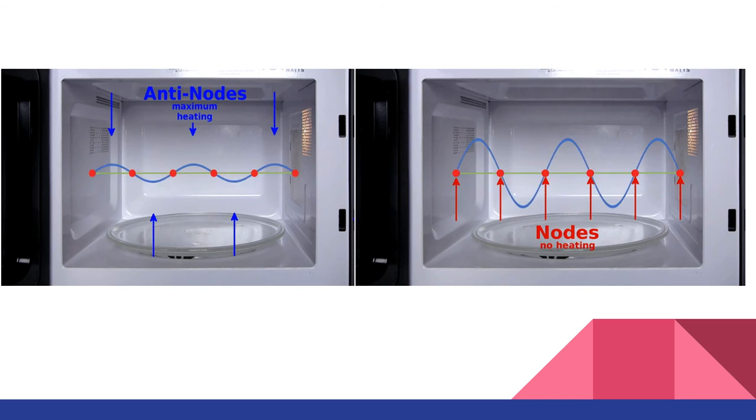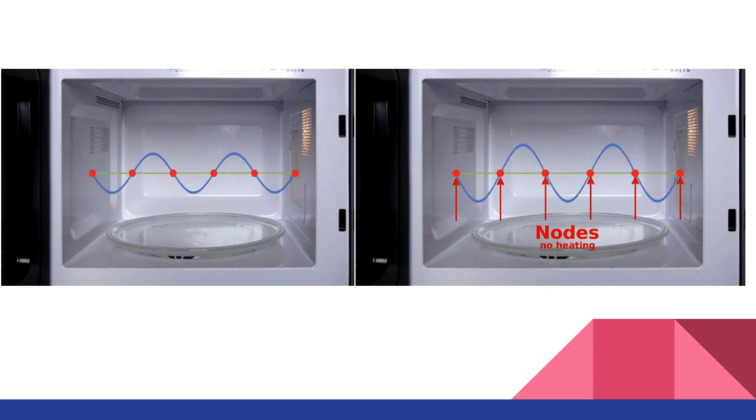So our food is cooked unevenly. Because of this reason, a turntable is used in microwave so that food is cooked evenly.